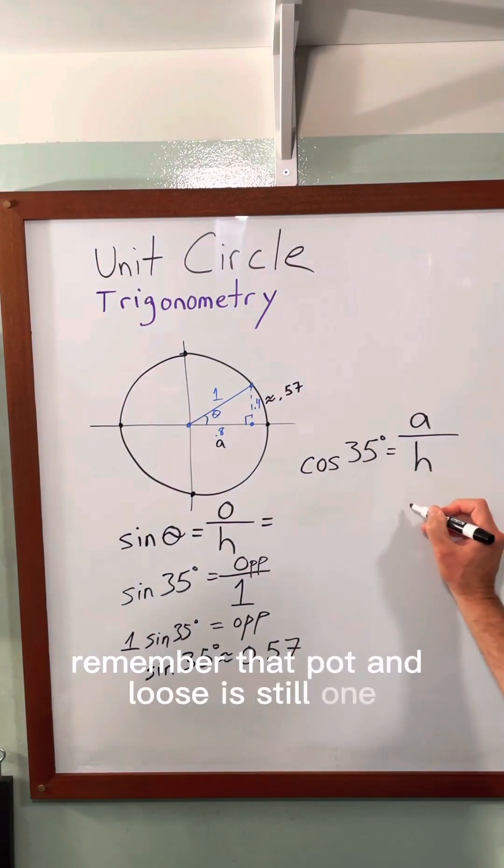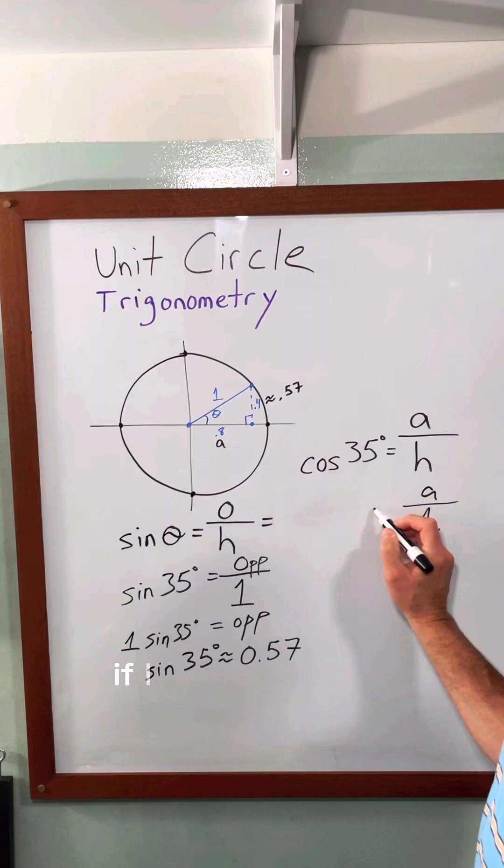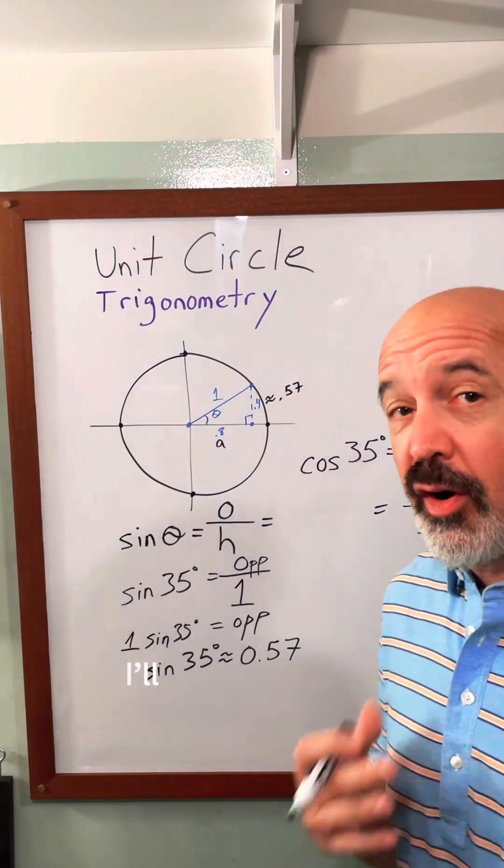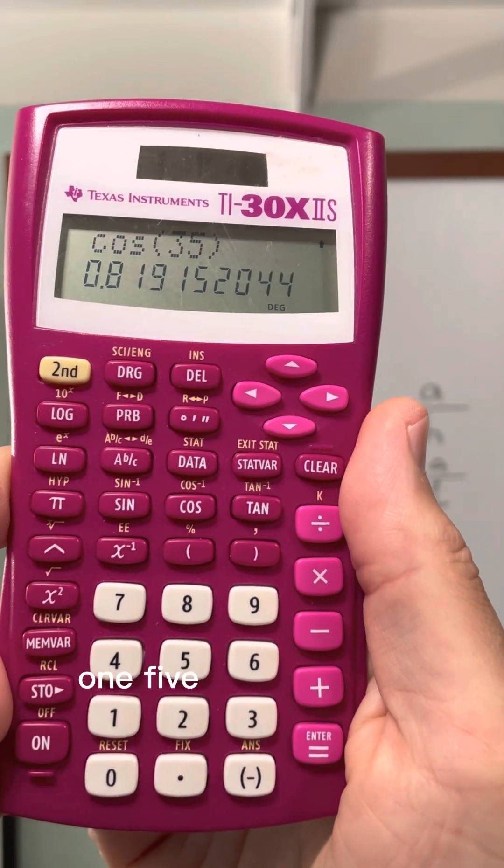So I simplified the same way. If I type in cos 35 I'll get my length. I got 0.819152 and so on.